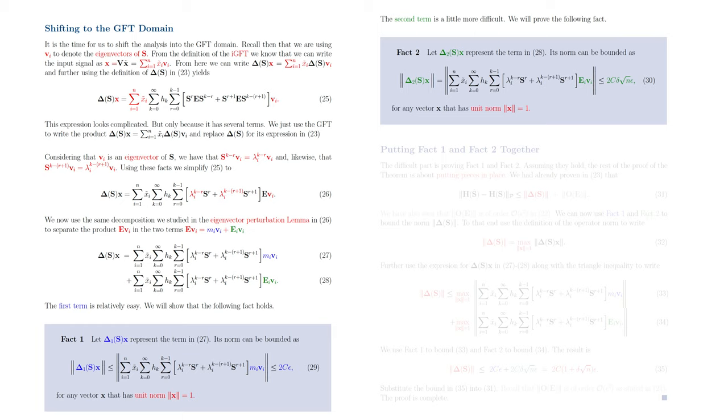Its norm can be bounded by 2 times c times delta times the square root of n times epsilon, as we show in equation 30. This bound also holds for any vector that has unit norm, and this fact we are going to call fact 2.